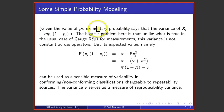That is, elementary probability says that the variance of X_j is this. Now what makes this modeling and analysis somewhat difficult here is that unlike the case in usual gauge R&R for measurements, that variance depends on p.